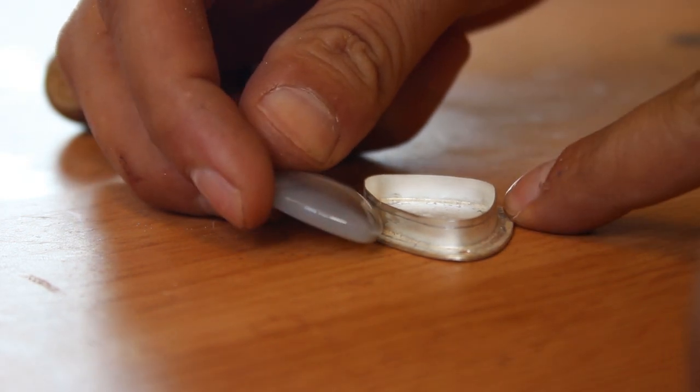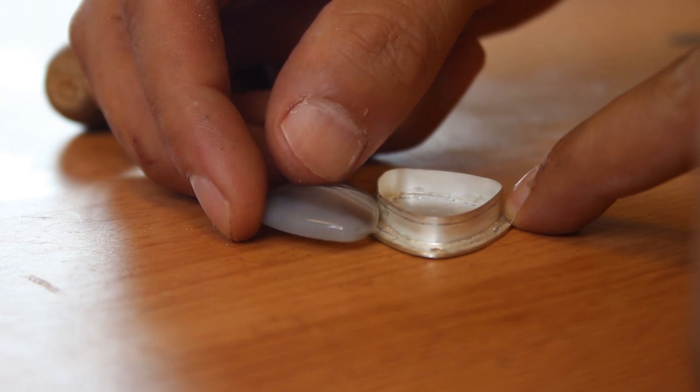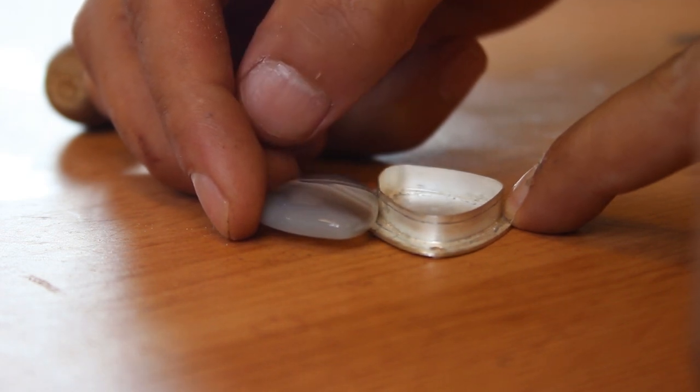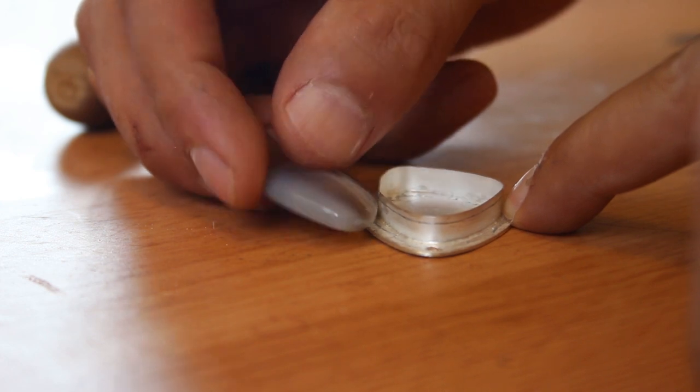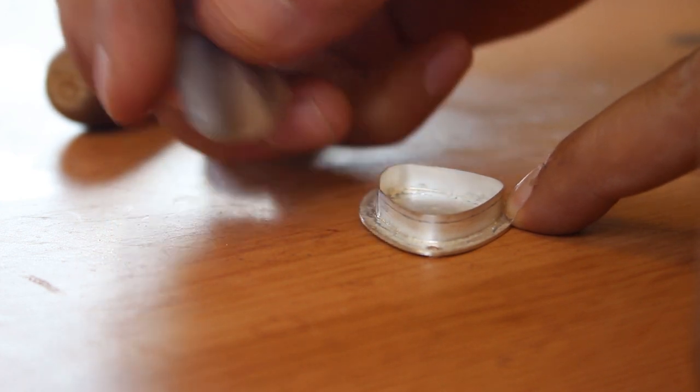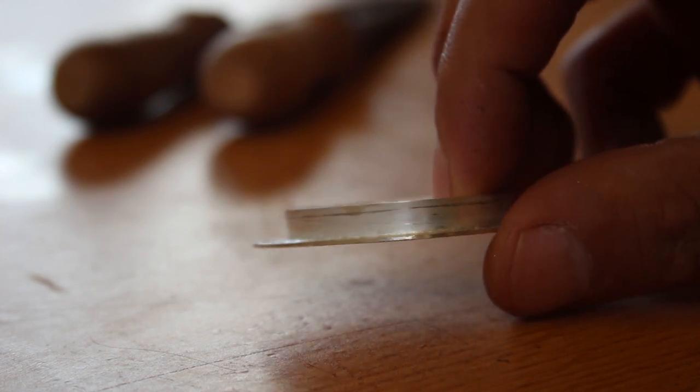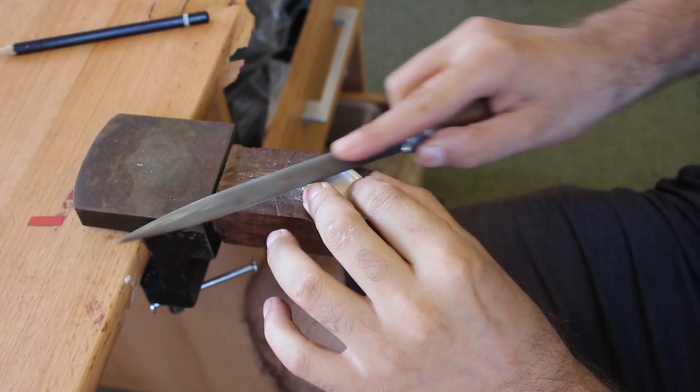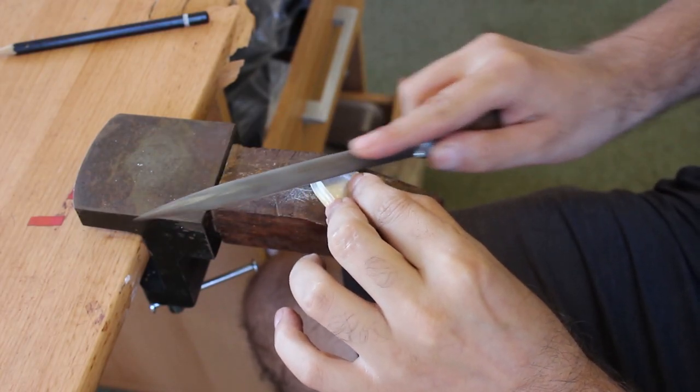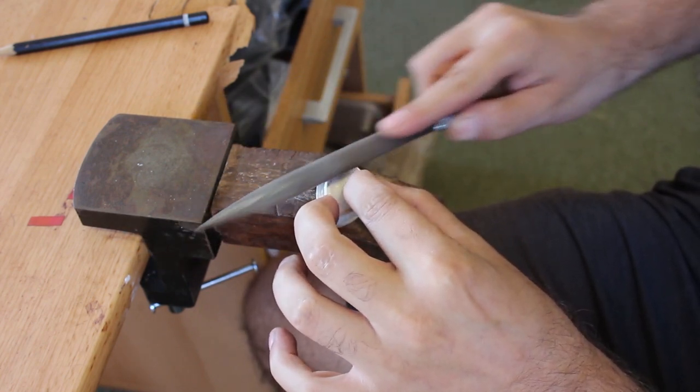Before setting the stone and completing the pendant, I needed to trim down the walls of the bezel as the bezel was just a little bit too high for the stone at this stage. With any bezel setting, you don't want the bezel to be too high. Otherwise, setting the stone will just be a bit of a nightmare. And you don't want it to be too small because then the bezel will wrap over the top of the stone to keep it in place.